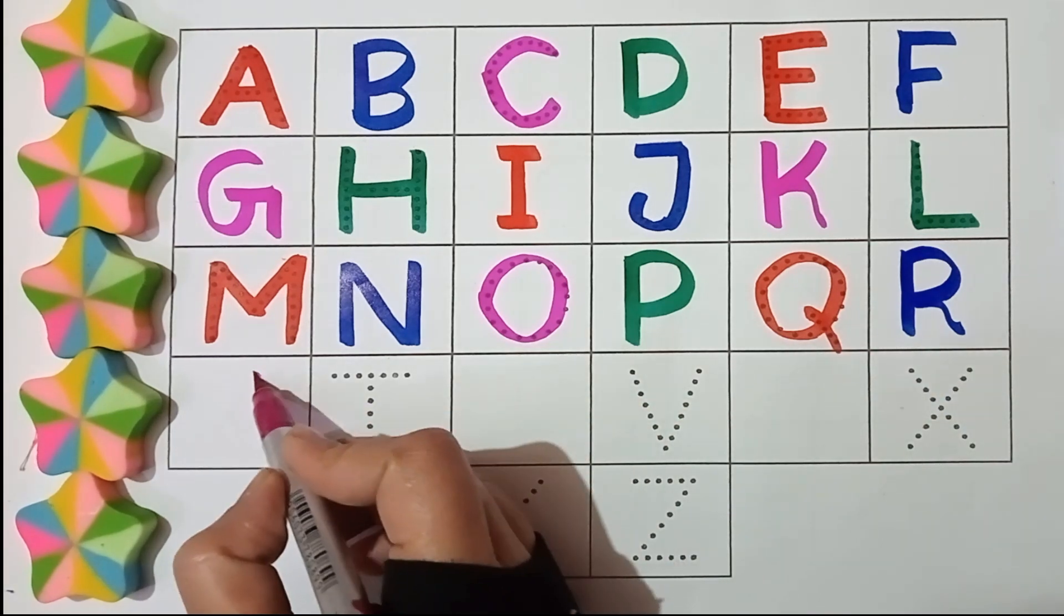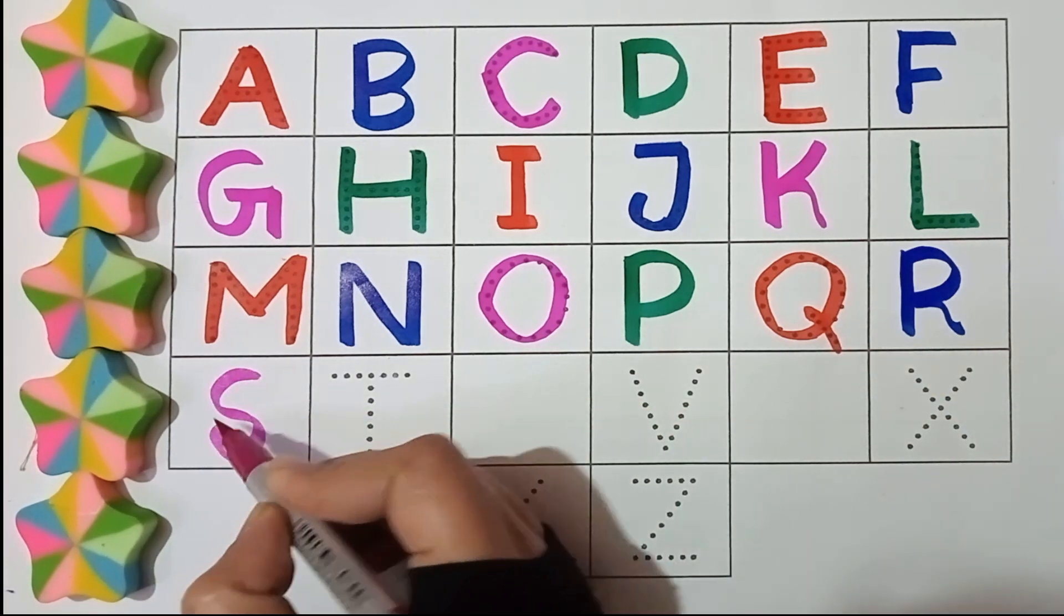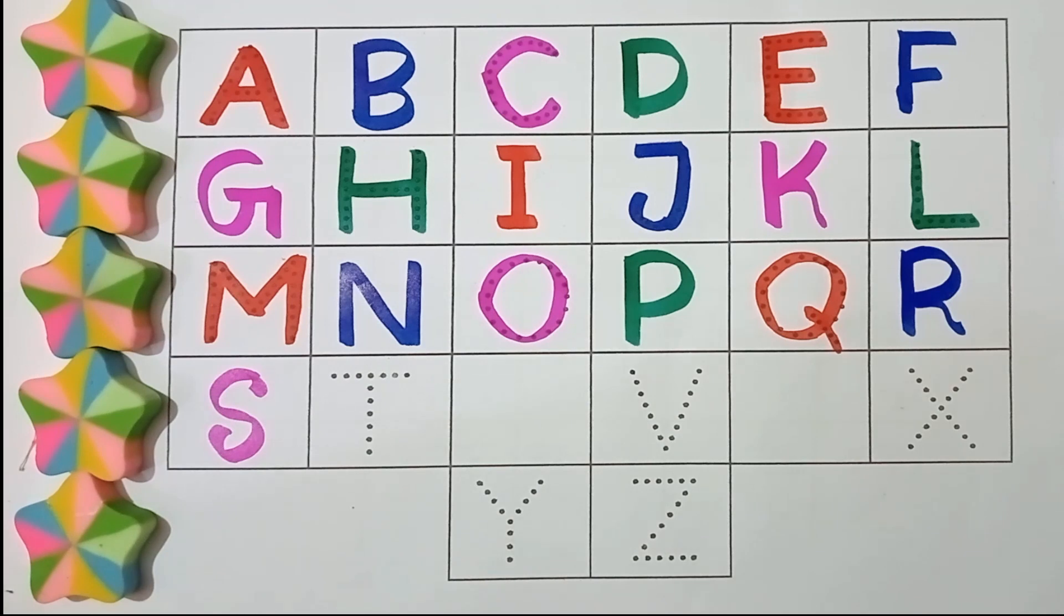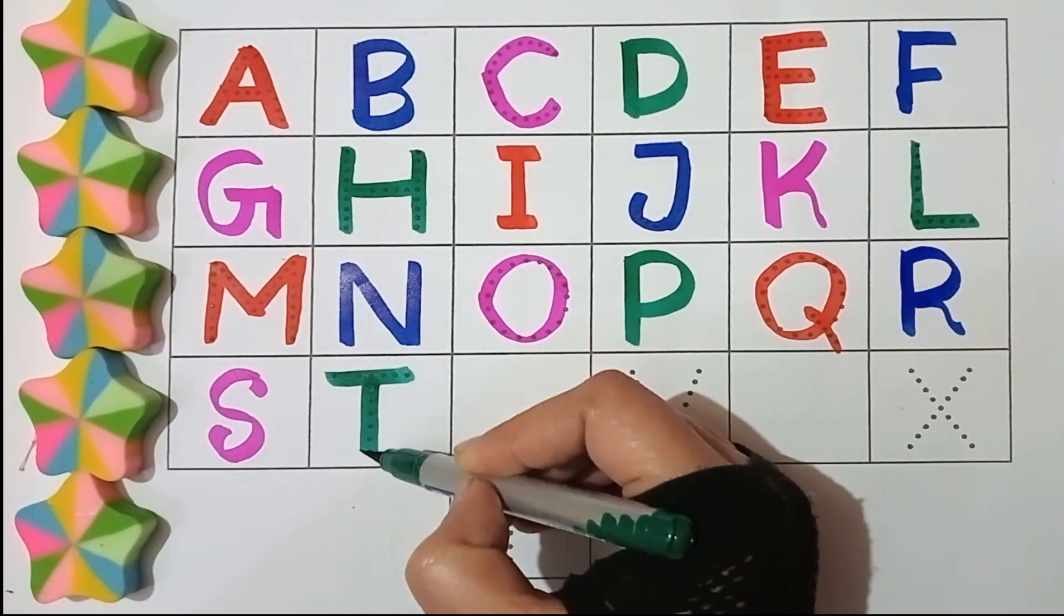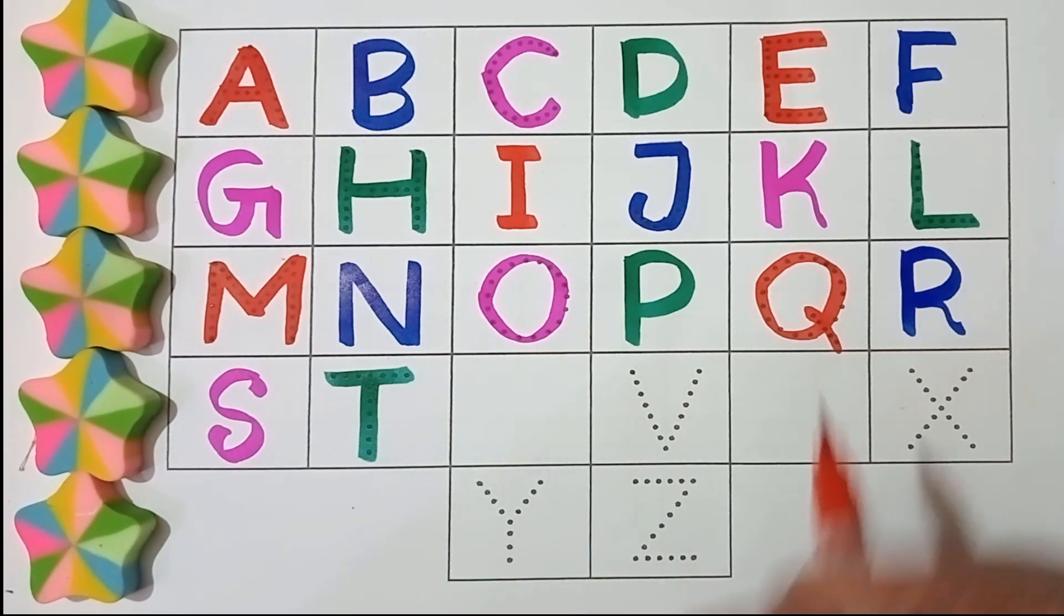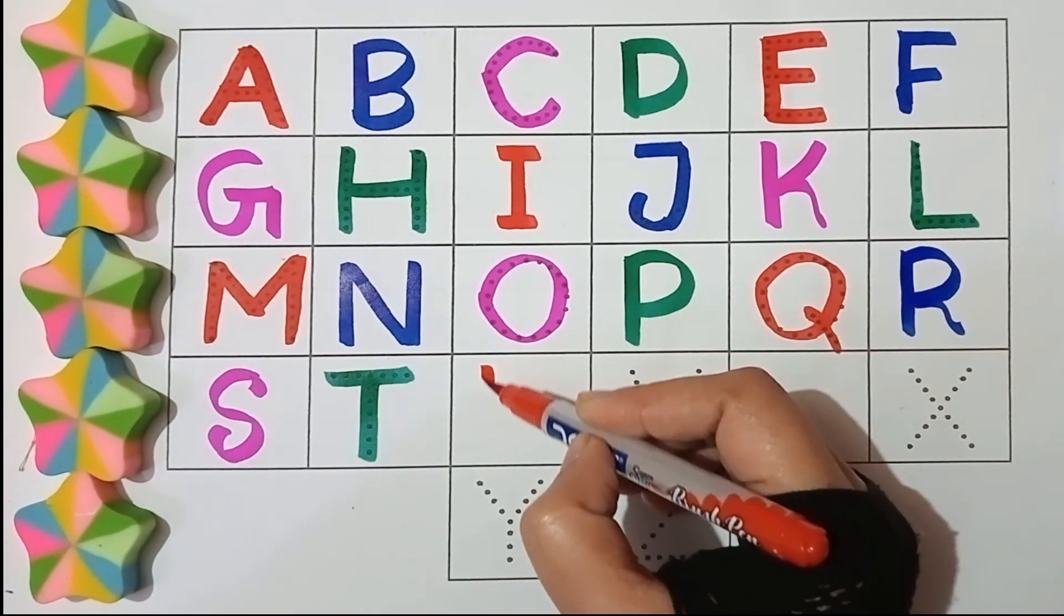Pink color. S, S for star, S. Green color. T, T for train, T. Red color.